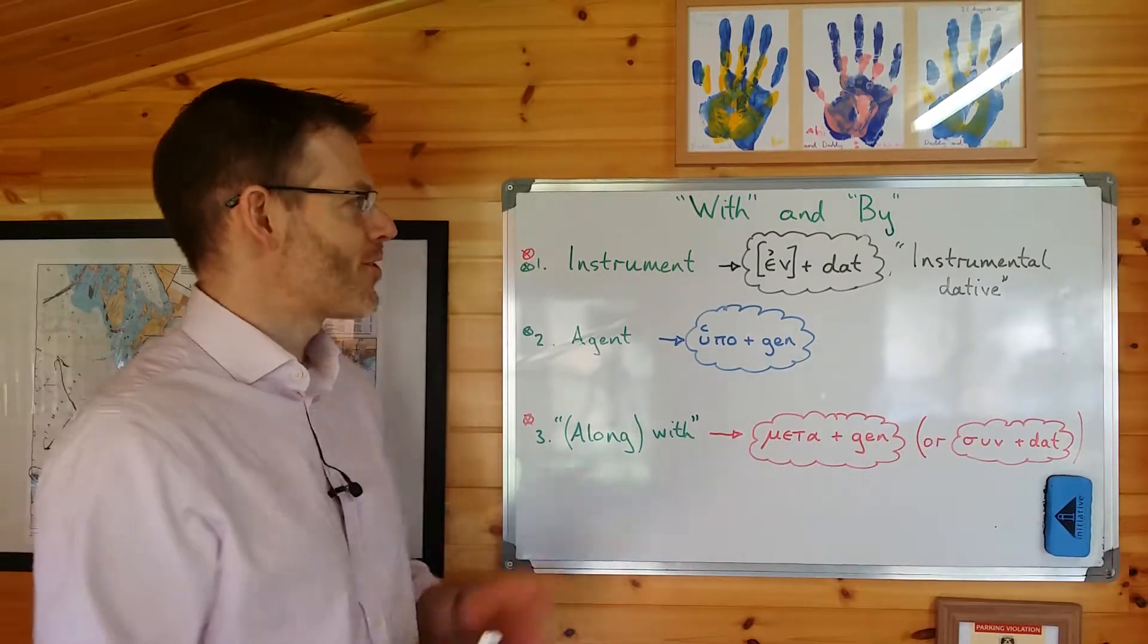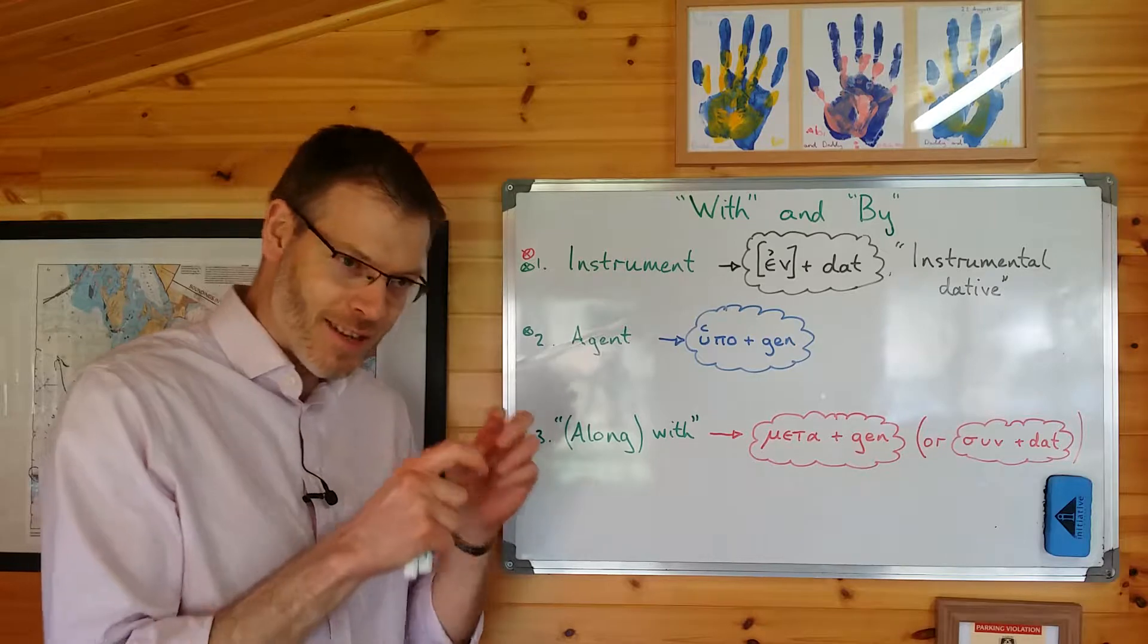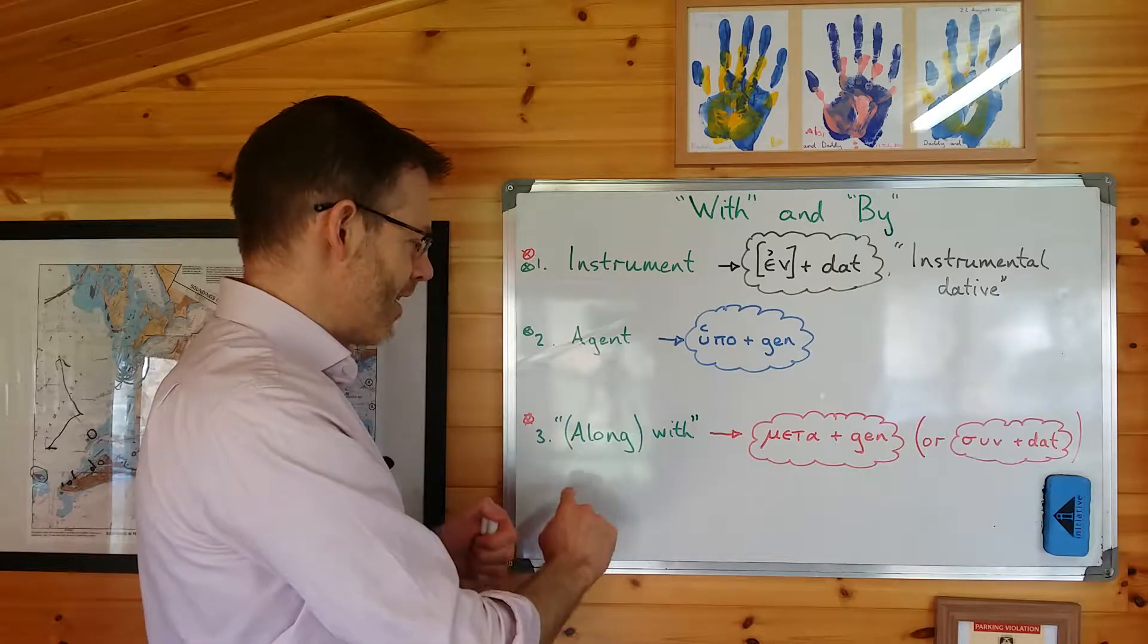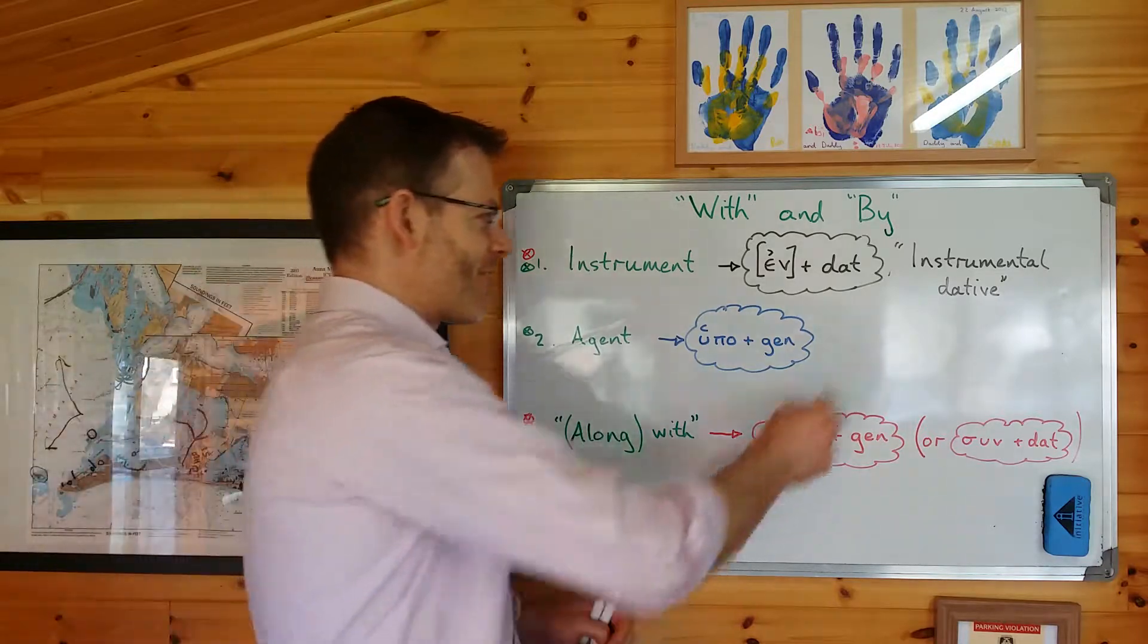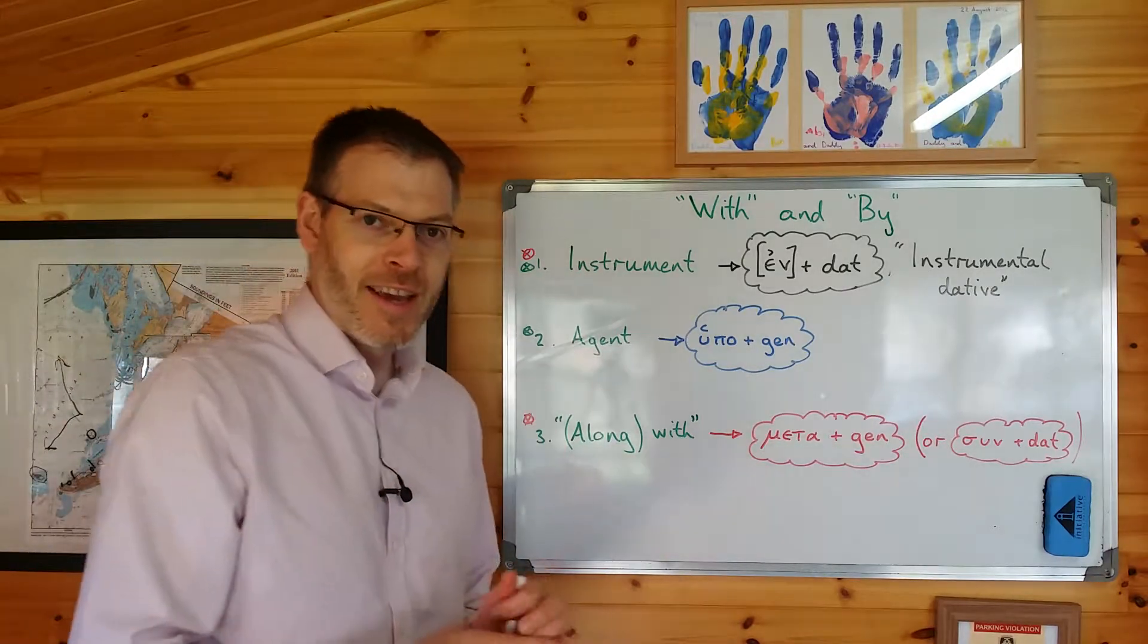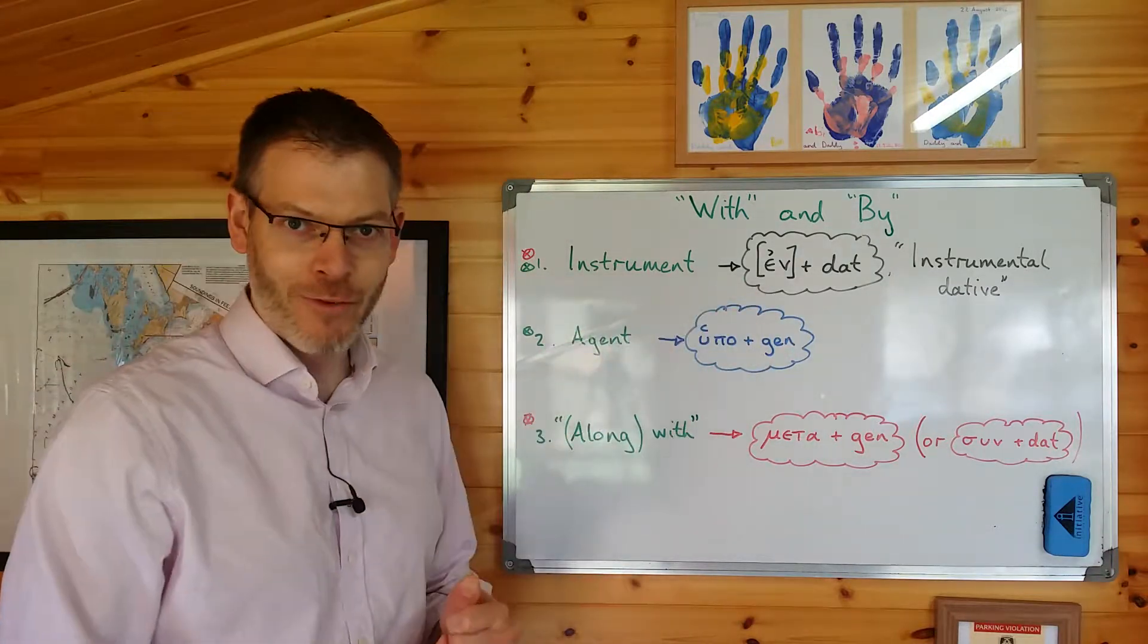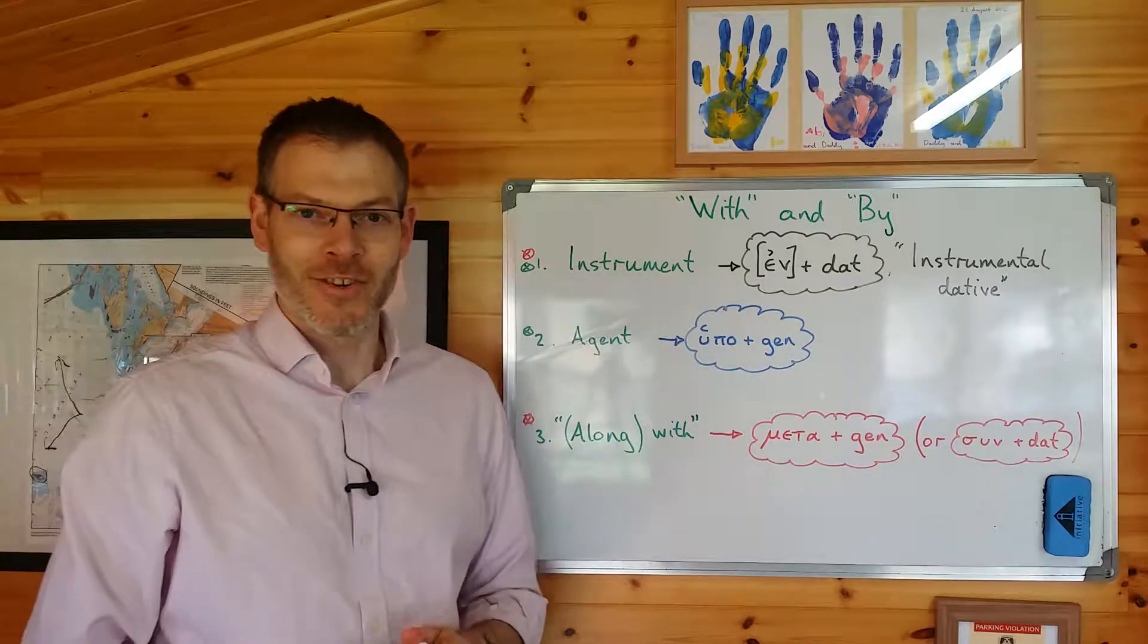So in order to translate the words with and by accurately into Greek, what we need to do is to think not just about the word that we're using, is it with or is it by, but the meaning of that word in that context. And to do so, what we need to understand is the ideas or the concept of an instrument, an agent, and the phrase that Duff translates along with. Once we understand these concepts here in the green, it's a trivial matter just to remember how to translate them into Greek. So what you do when you go from English into Greek is you think what is the concept being represented here using the words with or by, and then you translate that concept accurately using the appropriate Greek phrase. Let me go through then the meaning of these three concepts and how you translate those into Greek. Here goes.